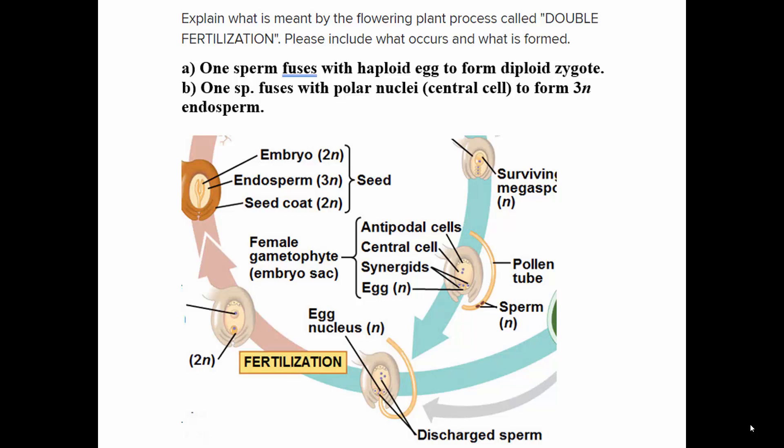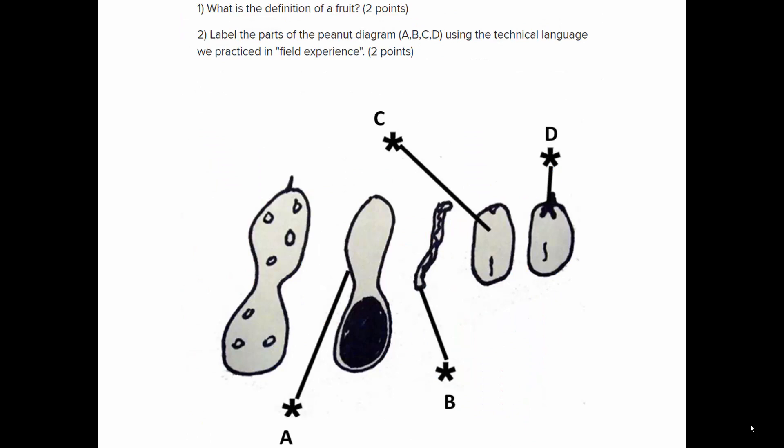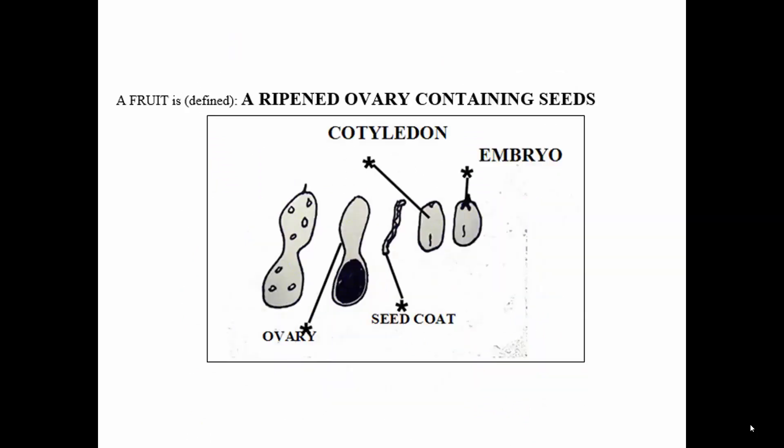A fruit is a ripened ovary containing seeds. As an example, we looked at the peanut: crack open a peanut and you're cracking open the ovary — there might be one, two, or three seeds inside. There's a papery covering on the outside which is the seed coat. Most of the peanut consists of cotyledons, which are seed leaves that serve as nutritive tissue, replacing the endosperm as the seed develops. Some seeds retain endosperm as the nutritive tissue, especially monocotyledons like grains.